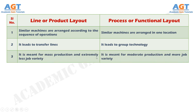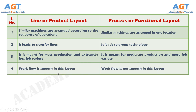Number 3: Product layout is meant for mass production and extremely less job variety, whereas process layout is meant for moderate production and more job variety. Number 4: In product layout, workflow is smooth, whereas workflow is not smooth in process layout.